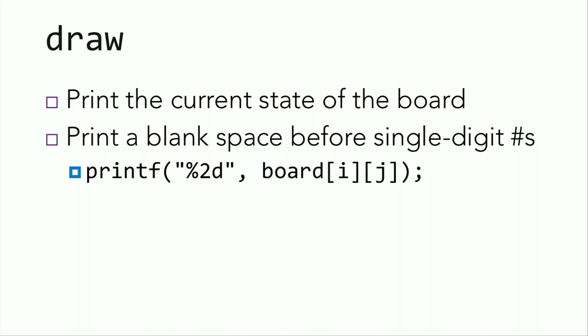Now that we've initialized our board, it's time to draw it. Draw will print the current state of the board, but you need to make sure to print tiles in the same order that you've initialized them. And you also need to format your numbers correctly. Because we might have single digits and double digits, then you want to print a blank space before any single digit numbers. You use that by using the placeholder %2d.